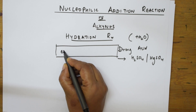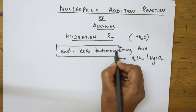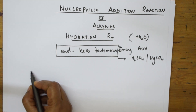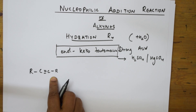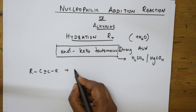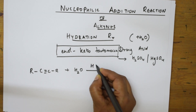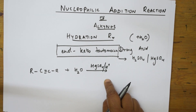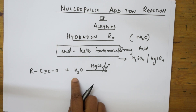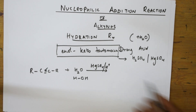Here we will first get the enol form. Let me take a general alkyne. We are going to do the hydration reaction — hydration is nothing but addition of water. This must occur in the presence of an acidic medium: HgSO4 / H+. Water can be written as HOH. There is a cleavage of the triple bond when water adds.